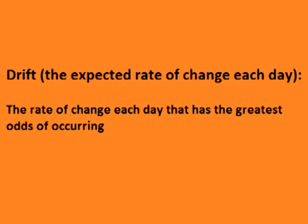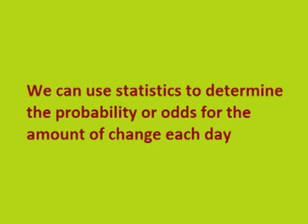The asset's drift is the expected rate of change for price. However, it is probably not the rate price will actually change each day — it is simply the rate that has the greatest odds of occurring. The rate price will actually change is an unknown random number. What we can do is determine the odds of what the rate will be, using the drift as the expected value and the historical volatility, also known as the standard deviation.